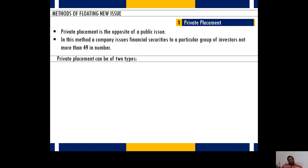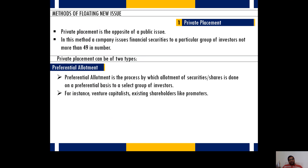There are two types of private placements. The first one is called preferential allotment. In preferential allotment, companies privately identify interested investors who are willing to invest capital for various business purposes — such as expansion, repayment of existing loans, or starting a new project.